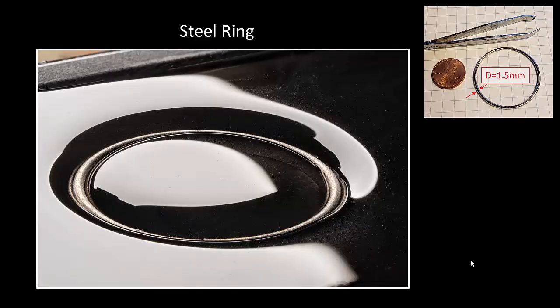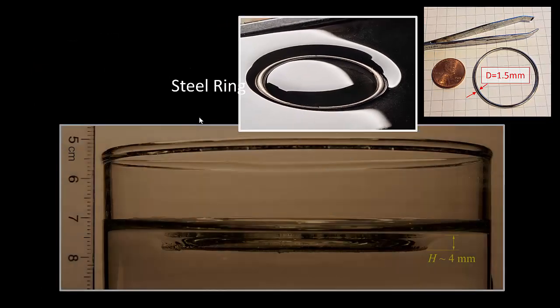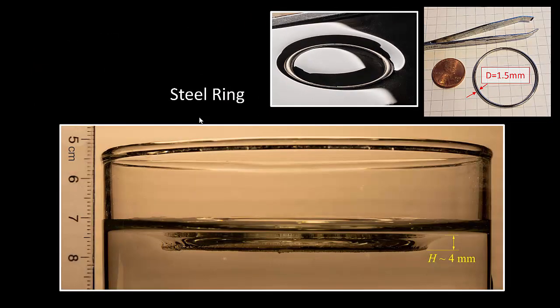This photo shows it a bit better. You can see from the shadow here just how far the ring sinks below the free surface. And here's a side view of the ring floating in a glass from which I was able to make an approximate measurement of the floating depth. The ring has a wire diameter of about one and a half millimeters and it sinks about four millimeters below the surface, which is really quite striking. That's more than two wire diameters below the surface.